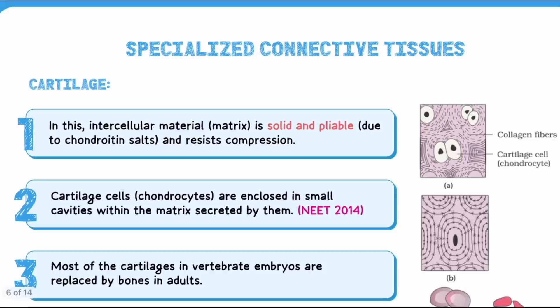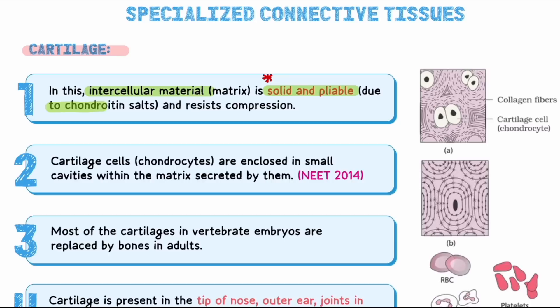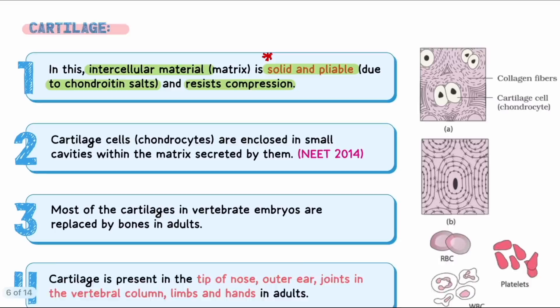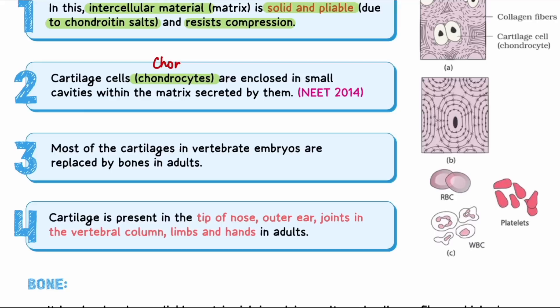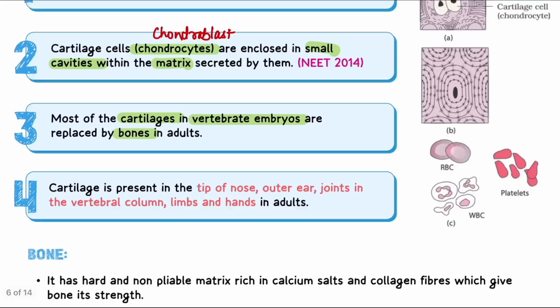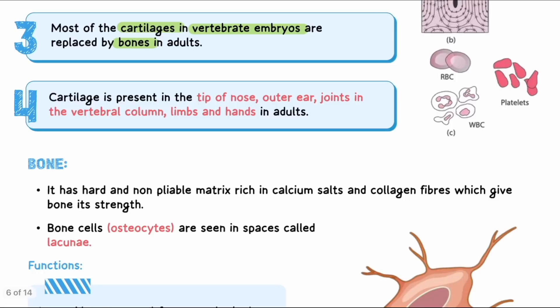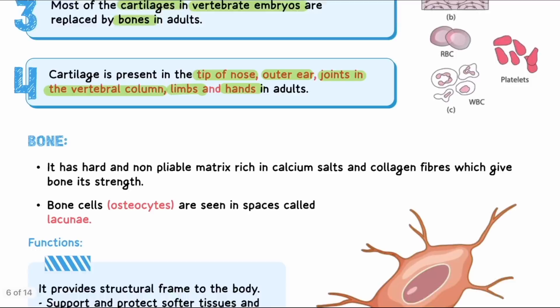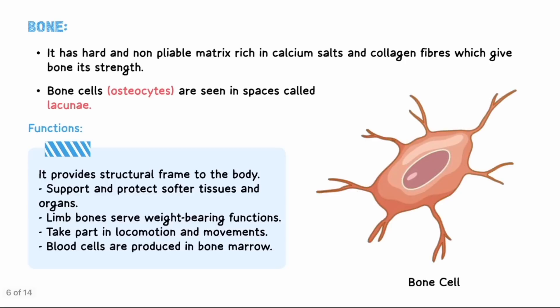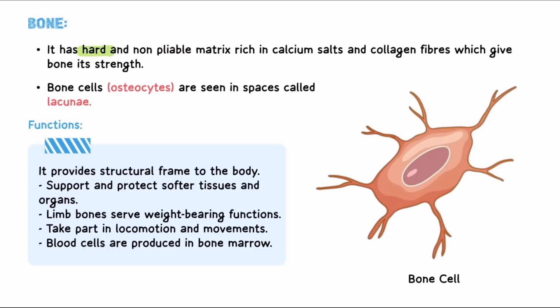The third type is specialized connective tissue, with three examples: cartilage, bone, and blood. In cartilage, the intercellular matrix is solid or pliable due to chondroitin salt deposition, which can resist compression. Cartilage cells are called chondrocytes, formed by chondroblast cells. They are present in small cavities in the matrix called lacunae. Cartilage is found in vertebrate embryos (converting to bone in adults), and in adults at the tips of the nose, outer ear, joints in the vertebral column, limbs, and hands.